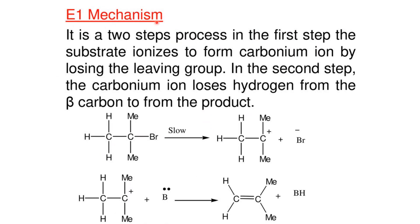E1 elimination is a two-step process. The first step (slow step) involves cleavage of the C-X bond to form a carbocation ion. In the second step, hydrogen is cleaved and a double bond forms.